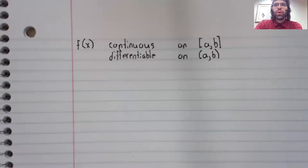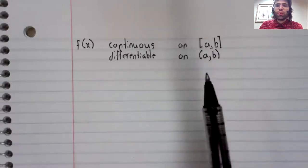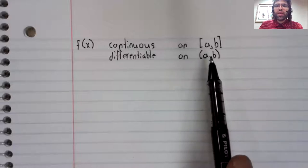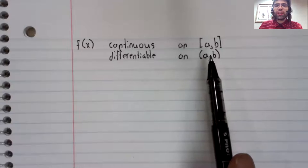Up to a point, the setting for the mean value theorem is the same as for Rolle's theorem: continuous on a closed interval, differentiable everywhere except perhaps the endpoints.